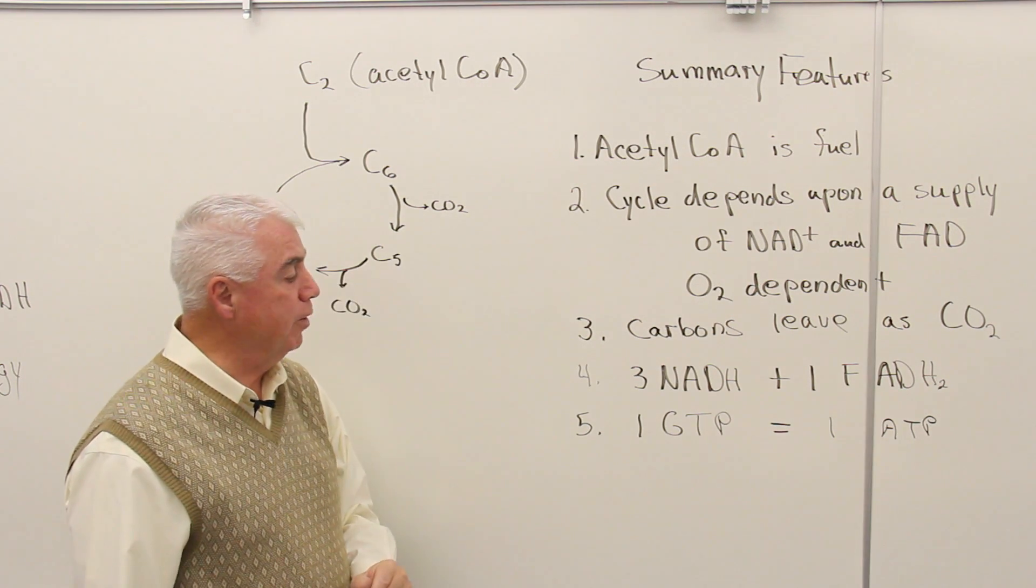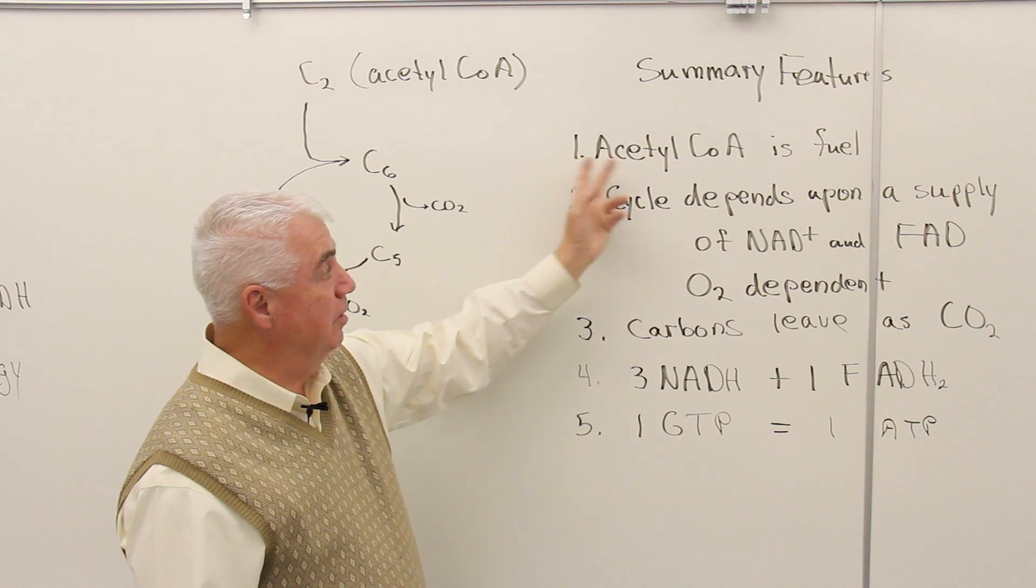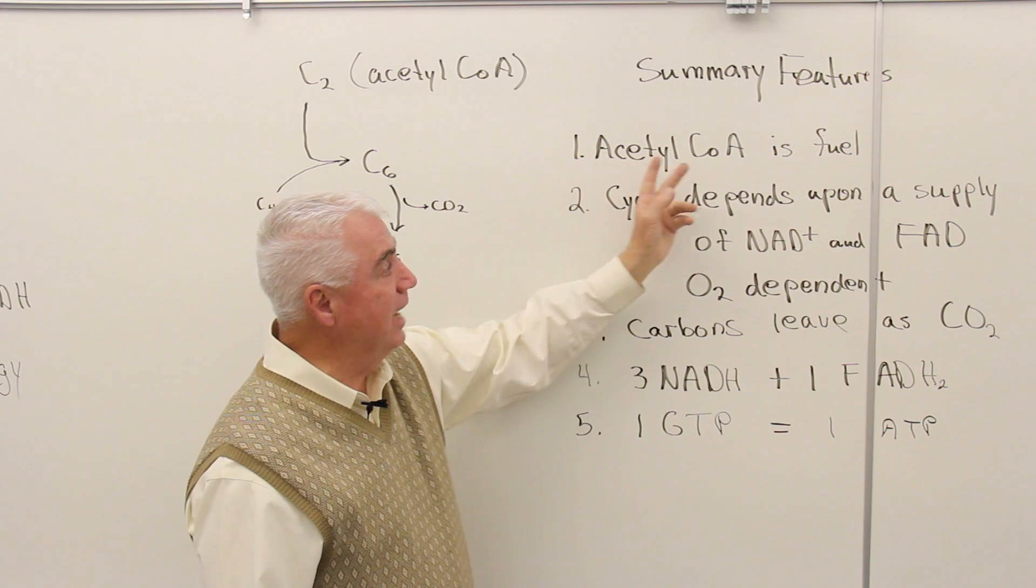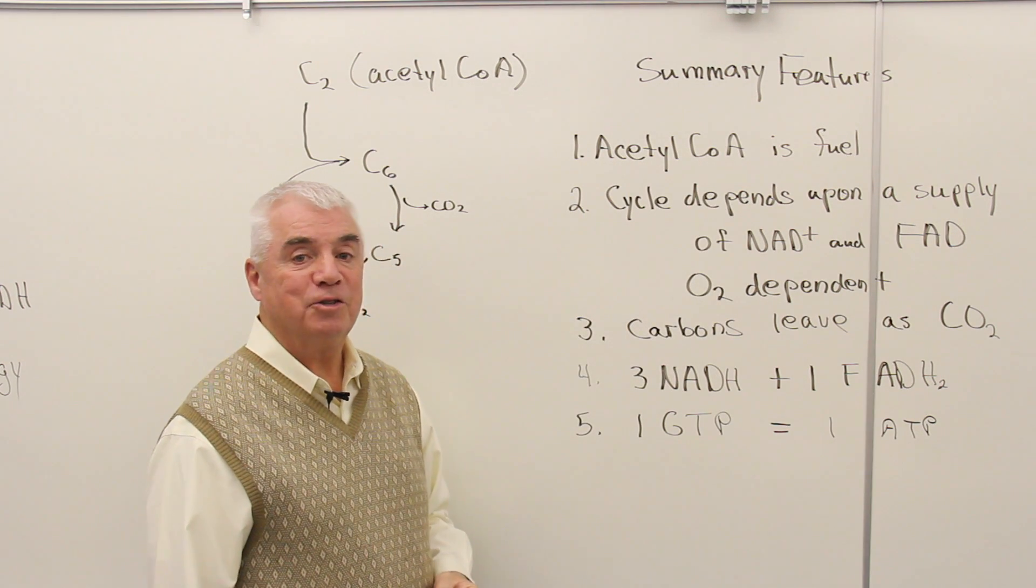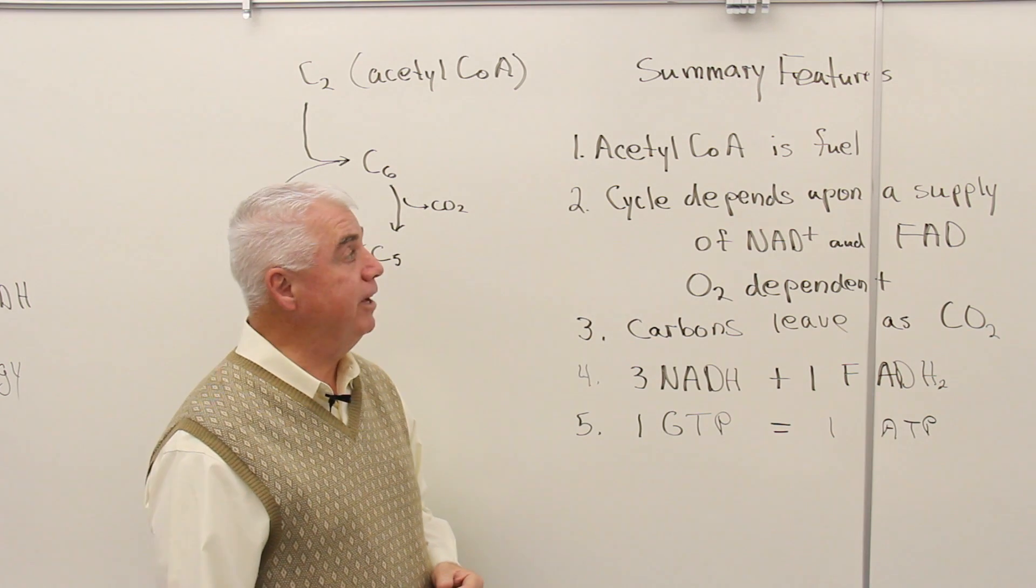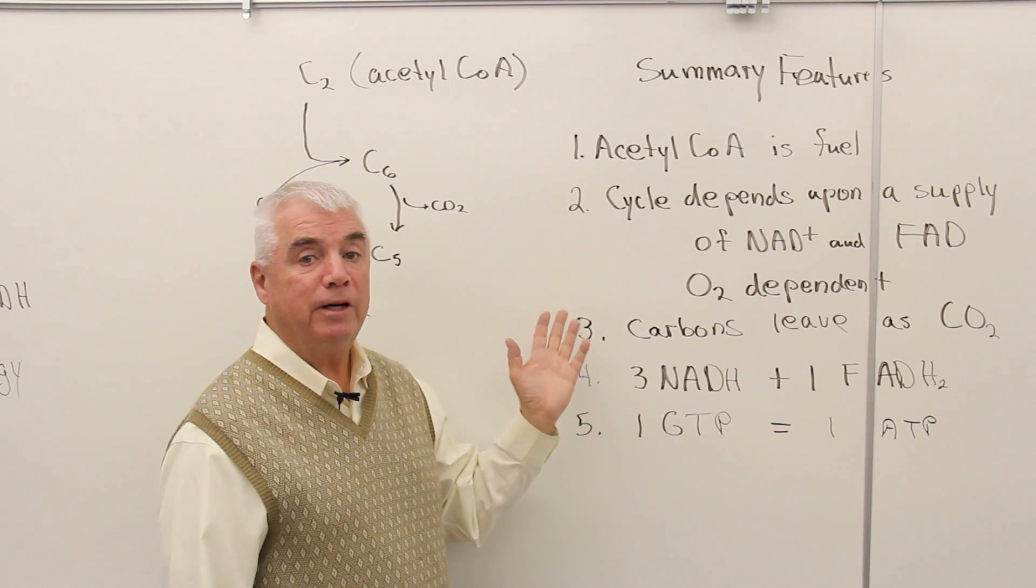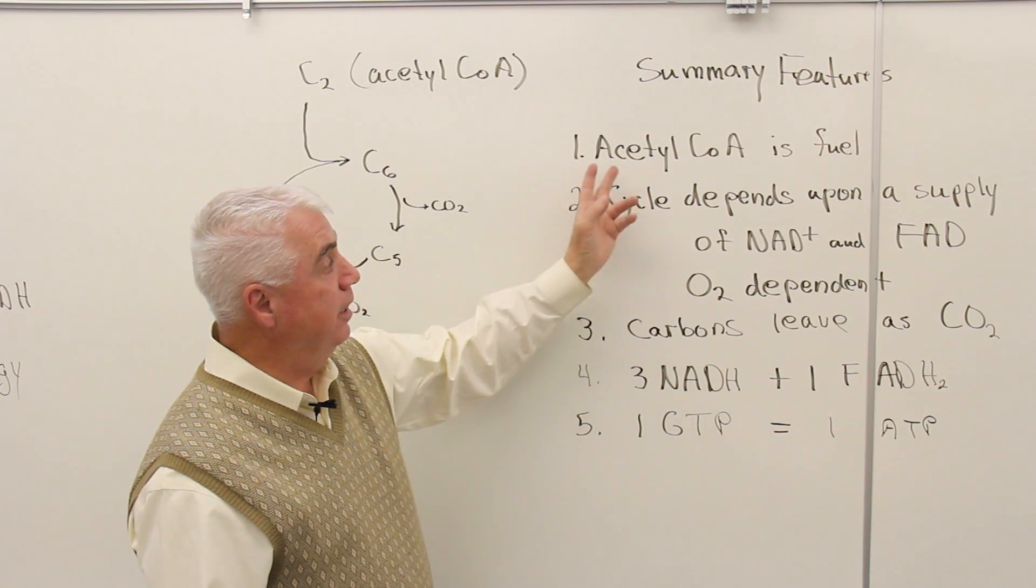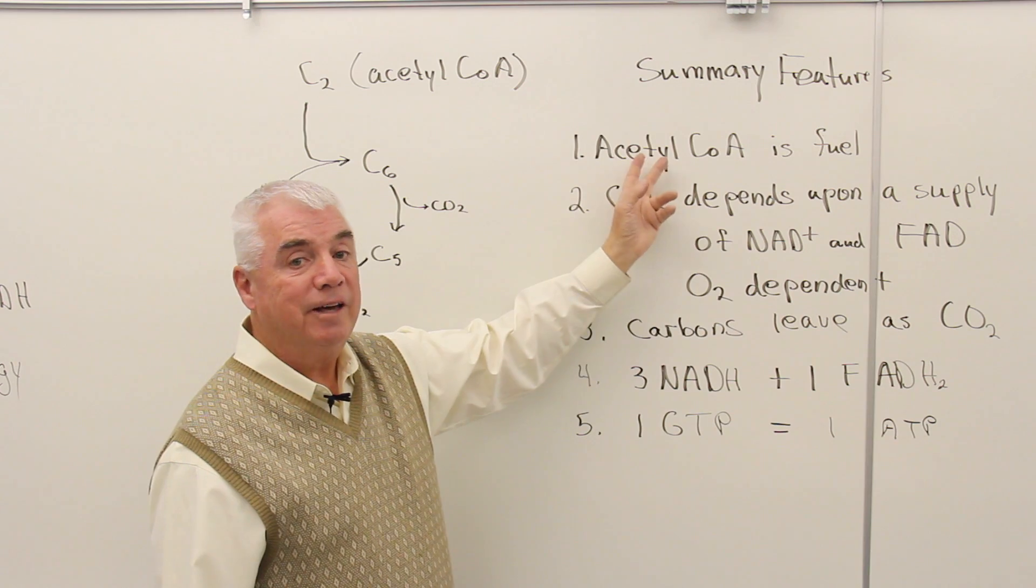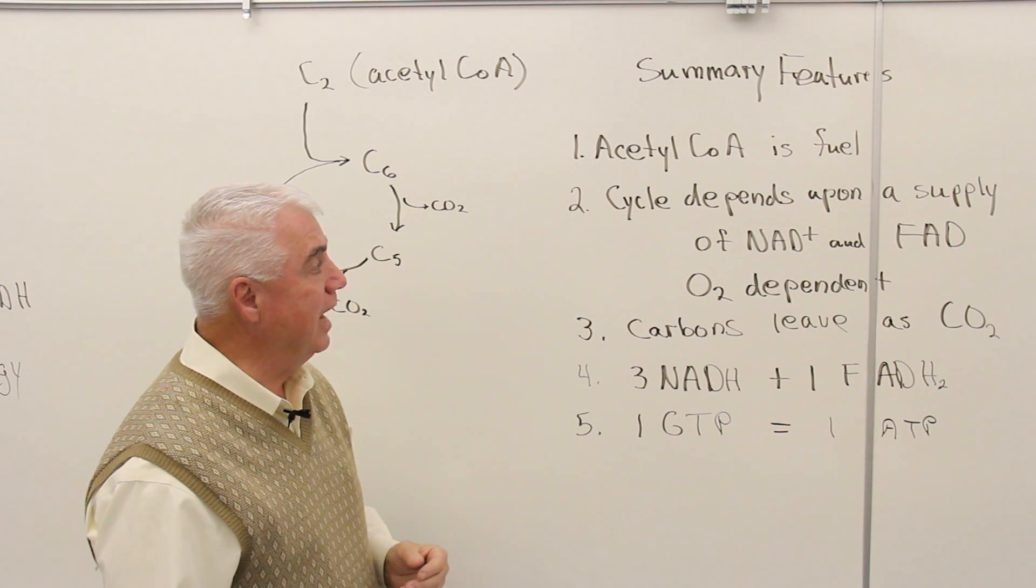In terms of summary features, there are five points. Number one, acetyl-CoA is the fuel. When glycolysis occurs, it forms pyruvic acid. Pyruvic acid permeates the mitochondrial membrane, forms acetyl-CoA inside, and then acetyl-CoA enters the citric acid cycle.